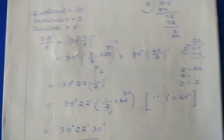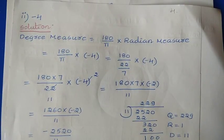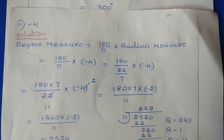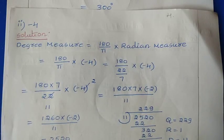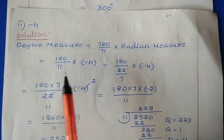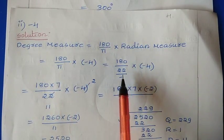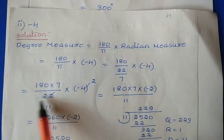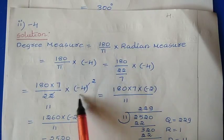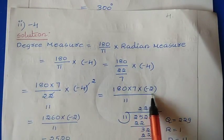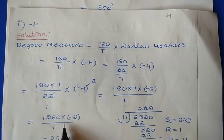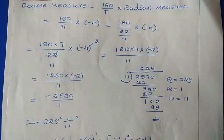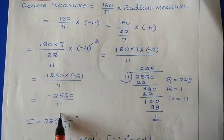Next question: they have given −4. So we have a negative radian value. The formula is degree measure = (180/π) × radian measure. So: (180/π) × (−4). Replace π with 22/7, giving: 180 ÷ (22/7) × (−4) = 180 × 7/22 × (−4). Simplifying: (180 × 7 × (−2)) / 11 = 1260 × (−2) / 11 = −2520/11.